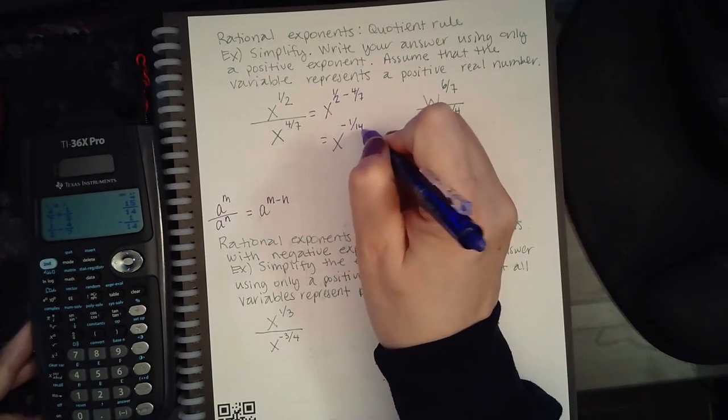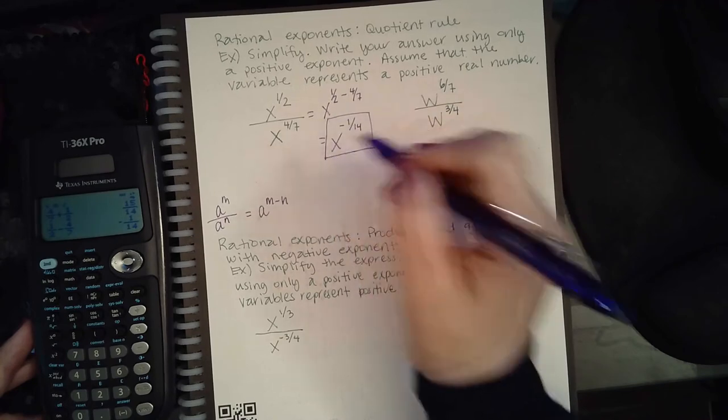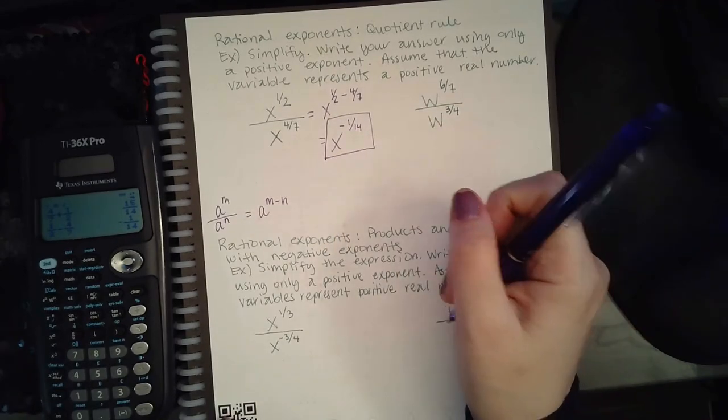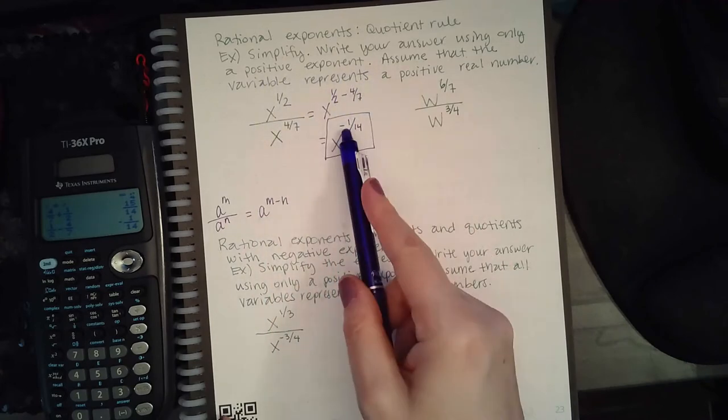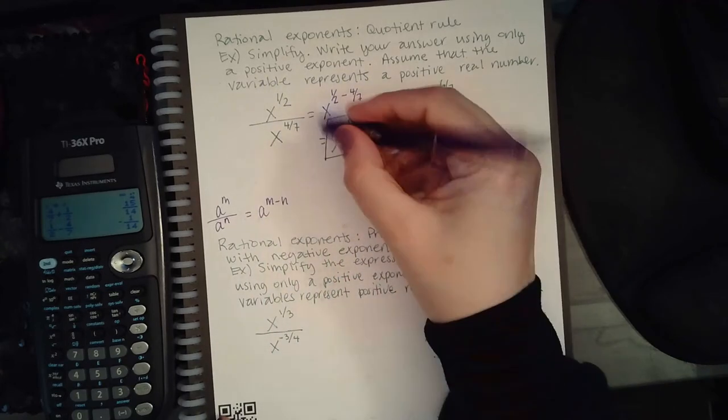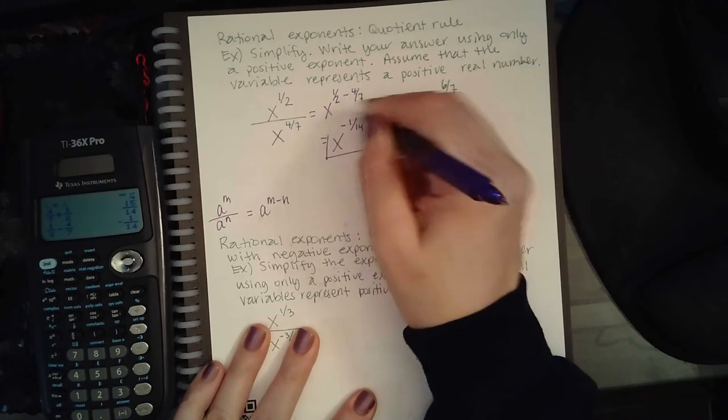So this expression would become x to the 1/2 minus 4/7, which let me see what that is. I get x to the negative 1 over 14, and this would be my result.